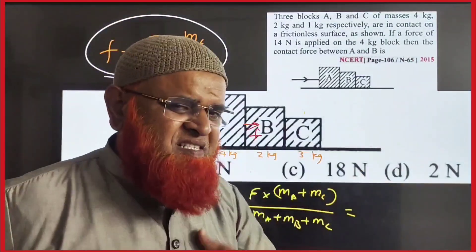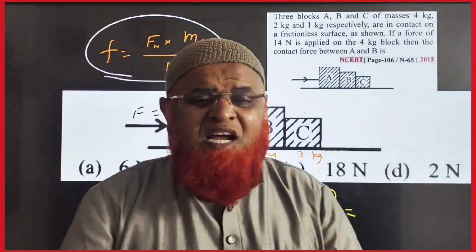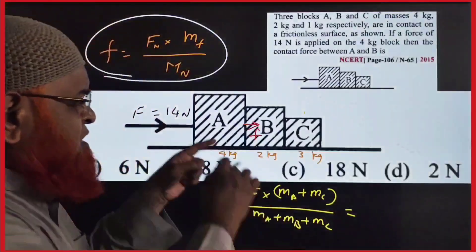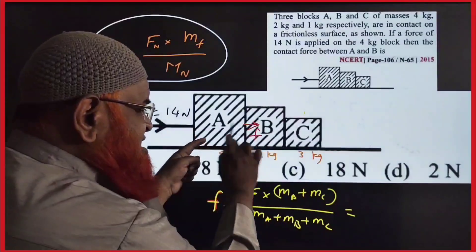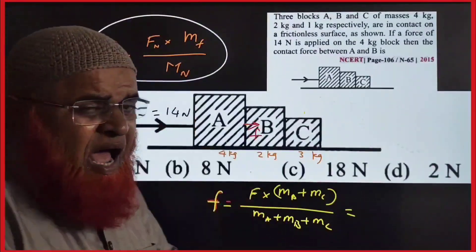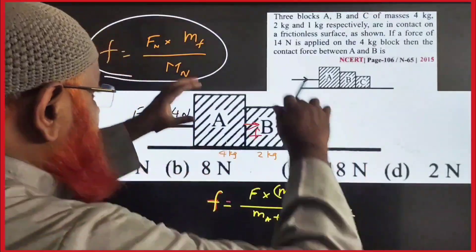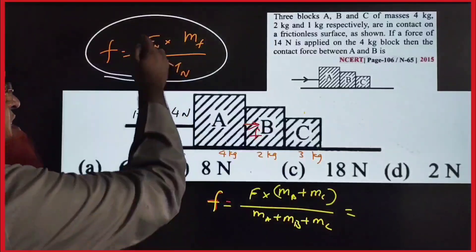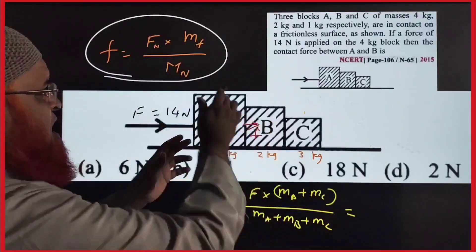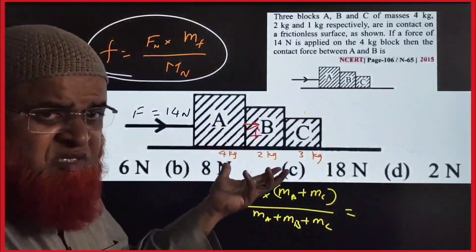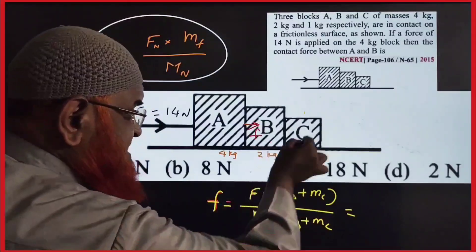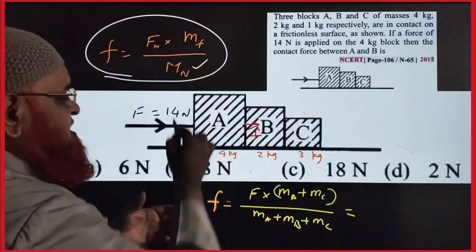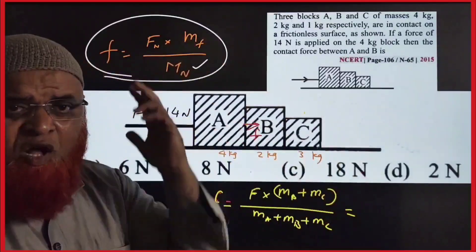This is a 3-block system, a type of problem previously asked. This shortcut you will not find throughout the internet. He is asking us to find out the contact force between A and B. The shortcut formula is: contact force between A and B equals the net force acting on the 3 blocks multiplied by the masses on which the contact force is acting — that means B and C — divided by the net mass.